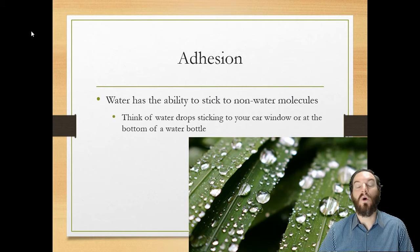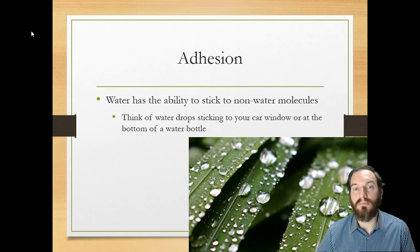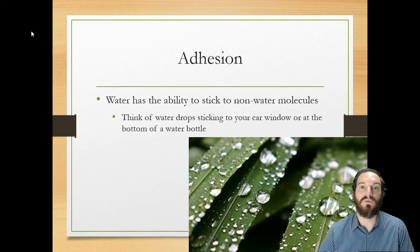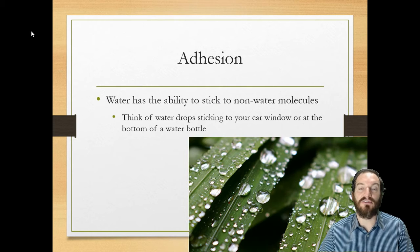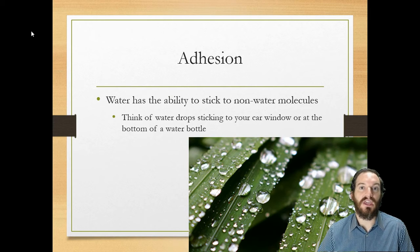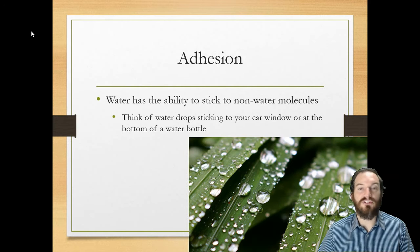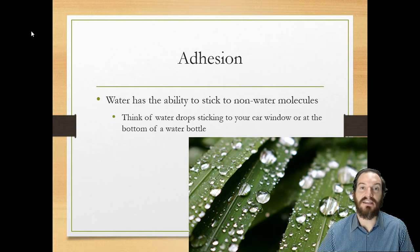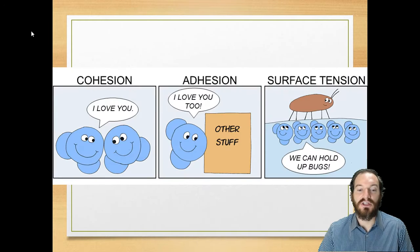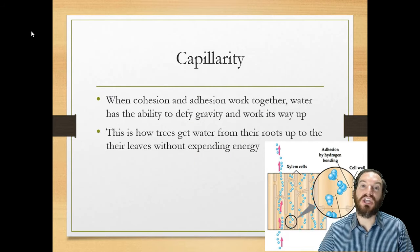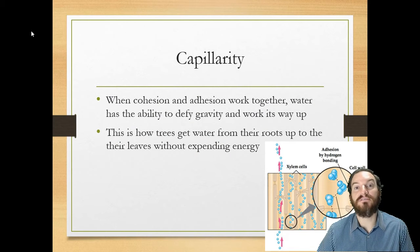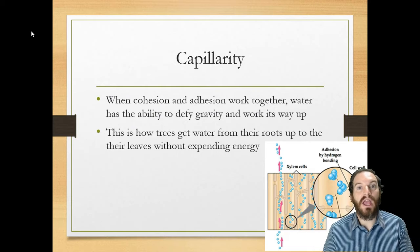Adhesion. Adhesion is when water sticks to non-water molecules. So when water sticks to non-water molecules, now we have adhesion. So again, raindrops sticking to the leaves of a plant, water inside a water bottle or on your windshield of your car, all those are different examples of adhesion. And adhesion, cohesion work together to form this property called capillarity, which will allow water to defy gravity and work its way up.